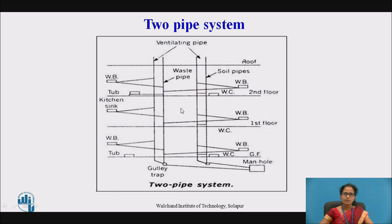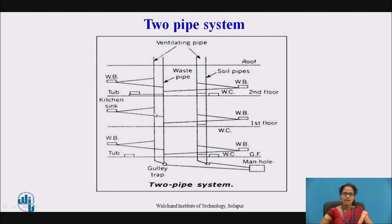The two pipe system consists of four vertical pipes — two separate pipes are provided. One pipe is for collecting waste water, called the waste pipe. The second is the soil pipe, which includes discharge material from water closets and urinals. The soil pipe is connected to the drainage system or manhole, whereas the waste pipe is connected through a gully trap. The traps of the WCs and wash basins are connected to the soil pipes, while the traps of wash basins and kitchen sinks are connected to the waste pipe.